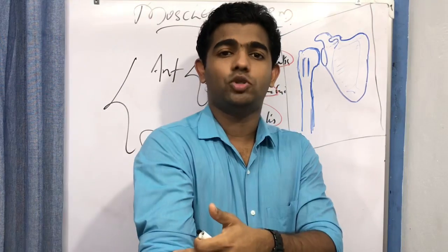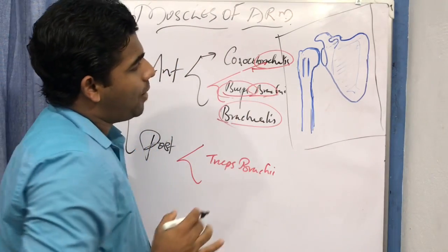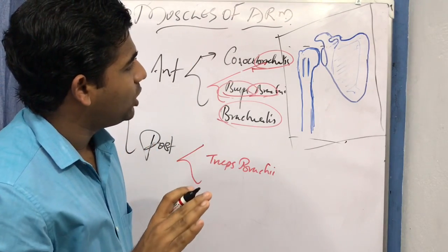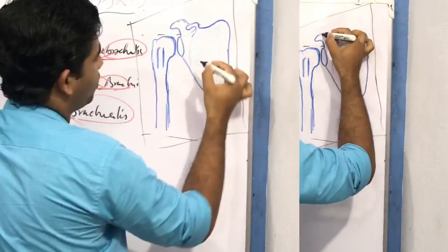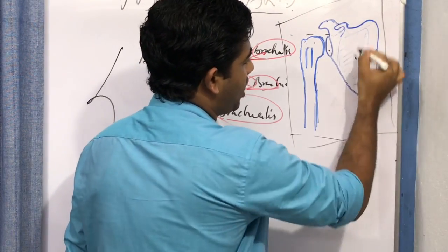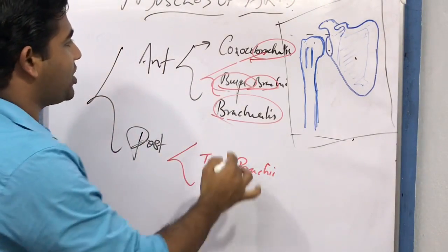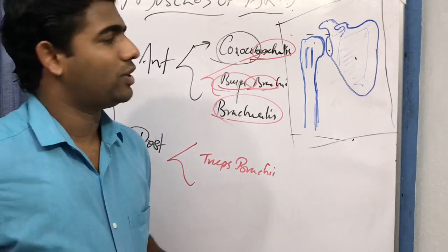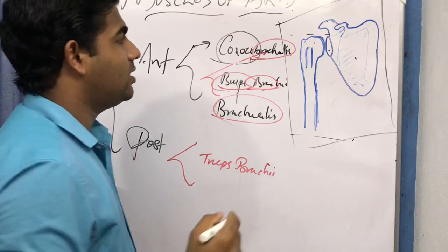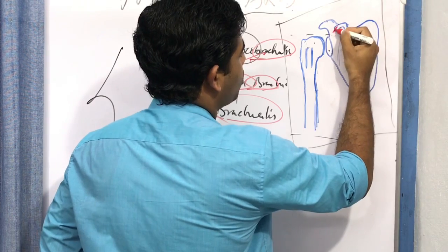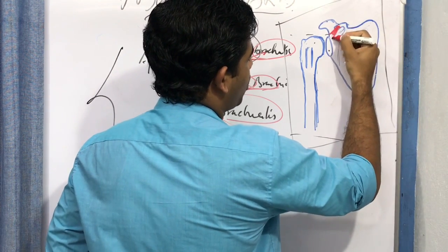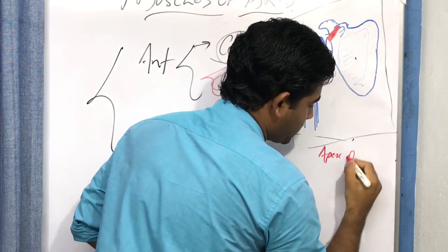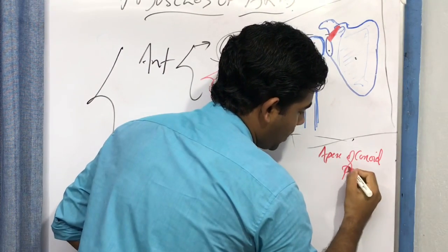Looking at this arm region from shoulder to elbow, identify the key landmarks: the coracoid process, the humeral head, the glenoid fossa, and the anterior surface of the scapula. The word 'coracobrachialis' itself tells you where its origin is — this muscle originates from the coracoid process, an important landmark in the scapular region. Specifically, the origin of the coracobrachialis is at the apex of the coracoid process.